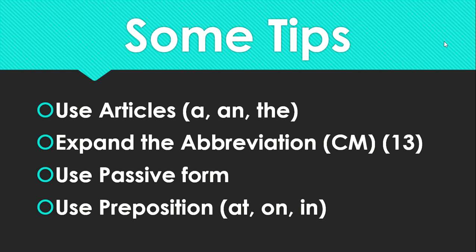The first tip: use articles — 'a', 'an', and 'the'. When you want to portray a floor, use the article 'a'. For 'an elephant' — why? Because the word 'elephant' starts with the letter E, a vowel. So if the word starts with a vowel sound, use the article 'an'. When you mention a position like manager, CEO, or chief minister, use the article 'the' — the manager, the CEO, the chief minister.